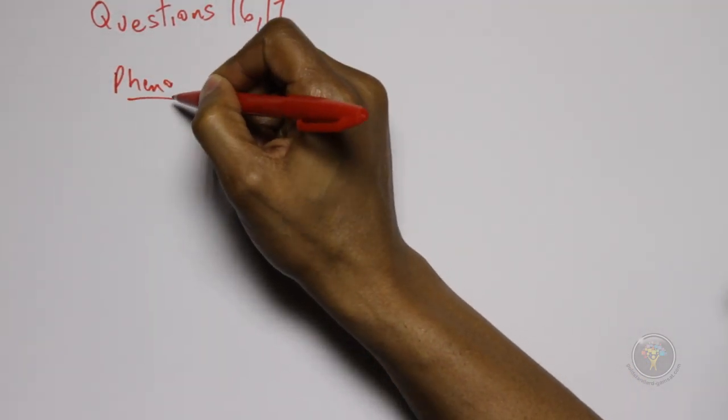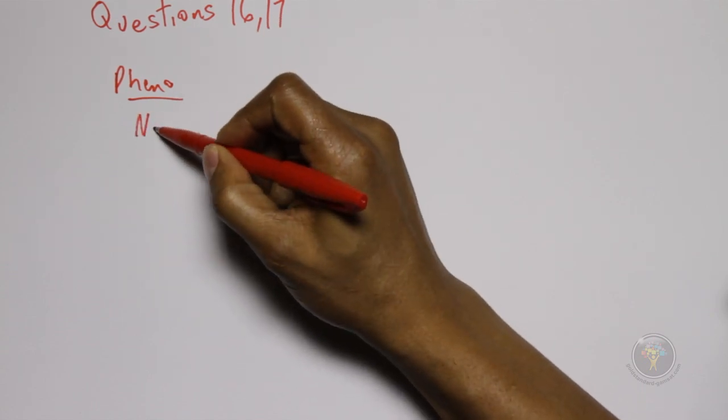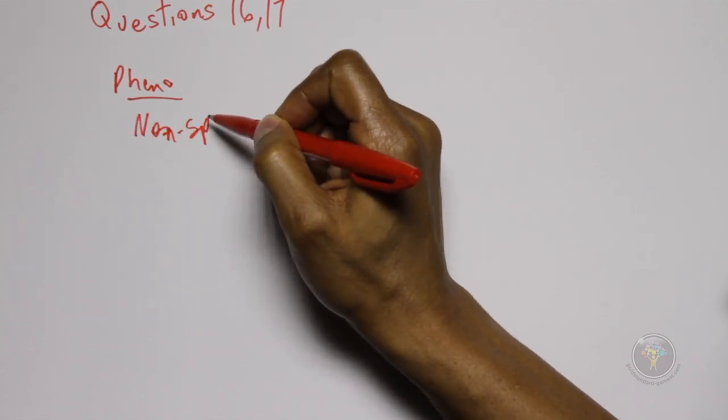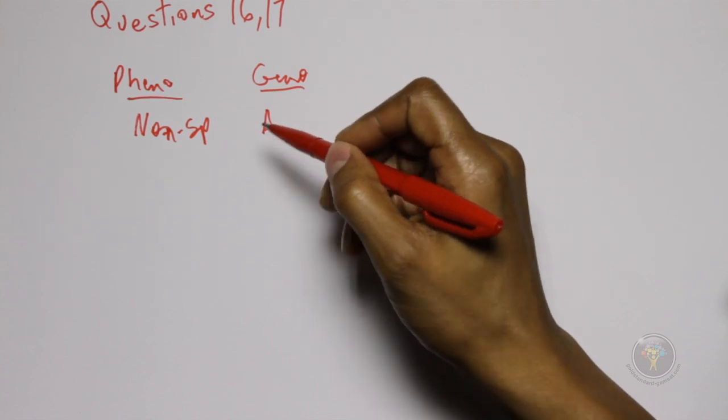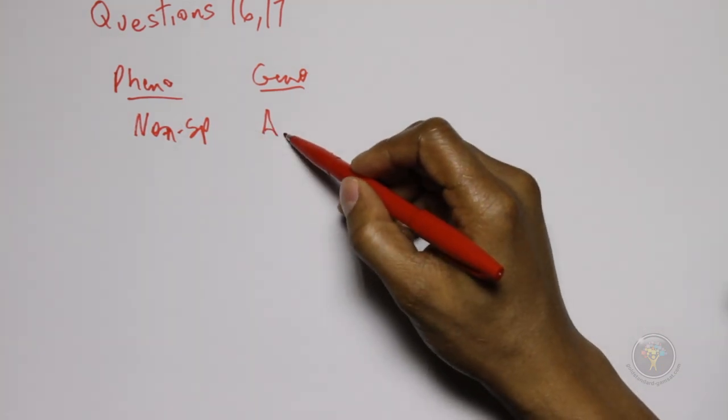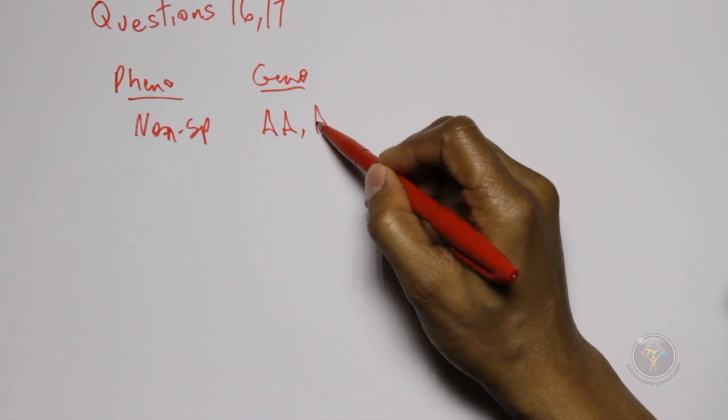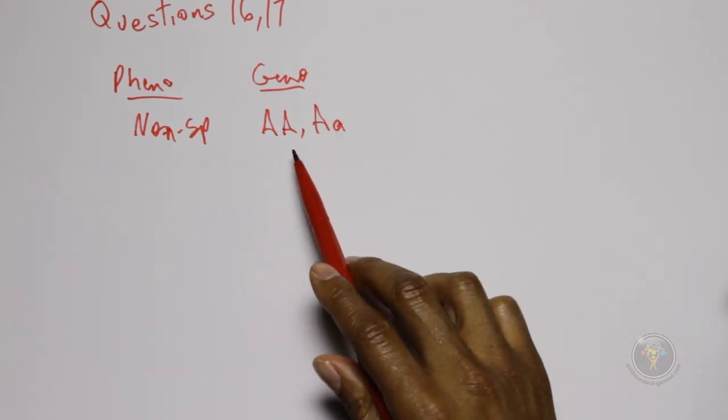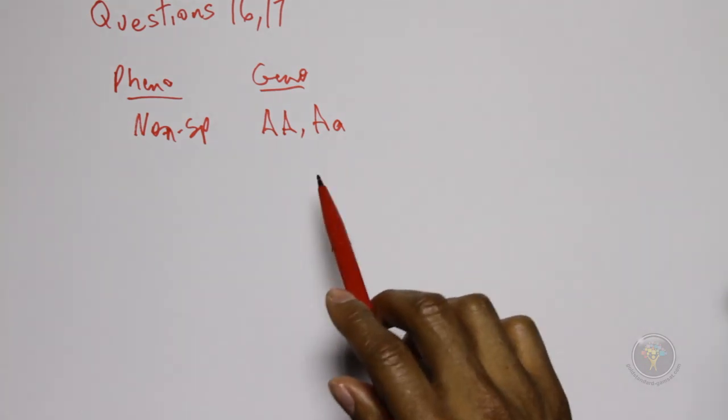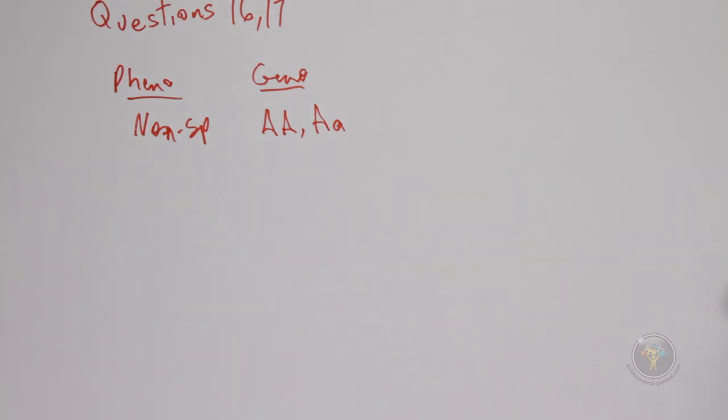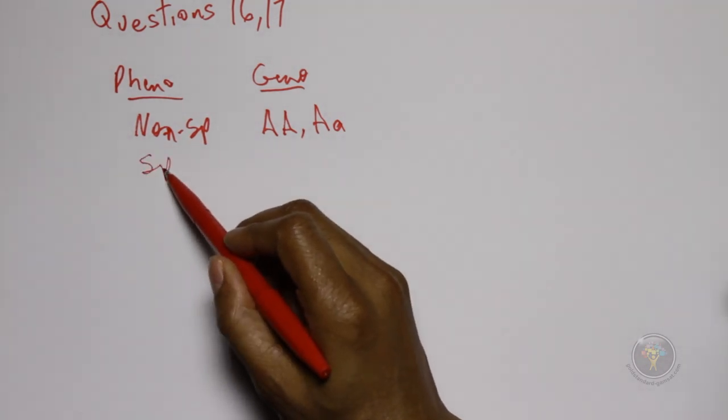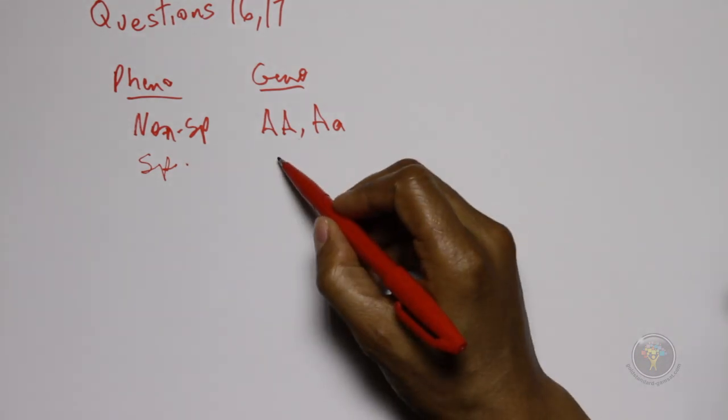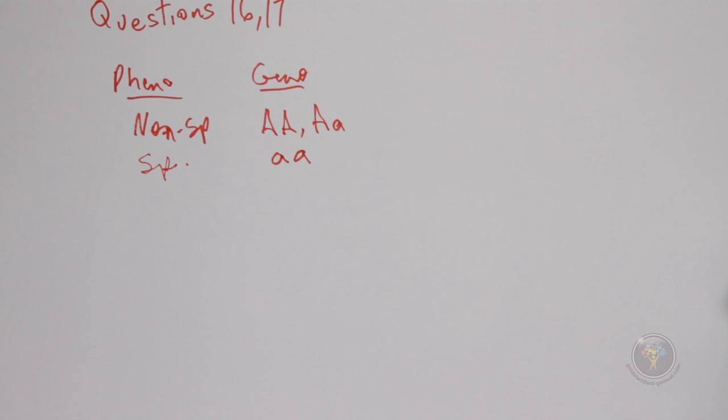So we have the phenotype here which would be non-spotting, and then the genotype for this, we'll just say capital A is dominant. So whether you have AA or Aa, so either homozygous dominant or heterozygous, either one of these would code for non-spotting. Then if you had spotting, this would have to be homozygous recessive, so small a small a would be coding for spotting.